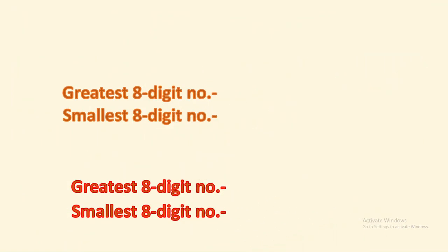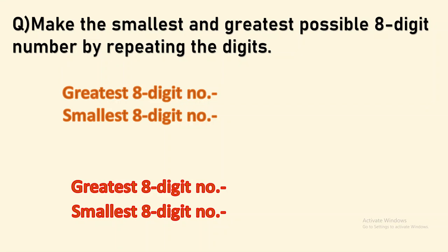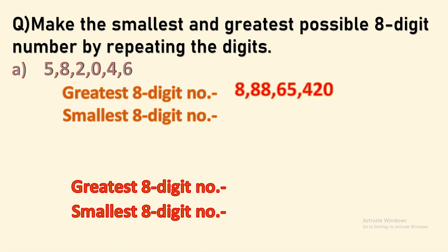Next question: make the smallest and greatest possible eight digit number by repeating digits. The six digits are 5, 8, 2, 0, 4, and 6. To get the greatest, repeat the greatest digit 8 — giving 8 crore 88 lakh 65,420. For the smallest, we cannot place 0 first, so the next smallest digit 2 goes first, then 0 repeated at the second place, giving 2 crore 4,568 as the smallest eight digit number.